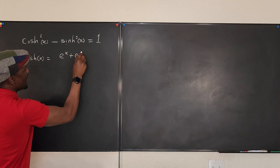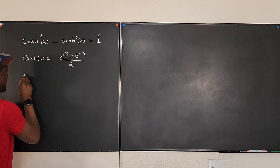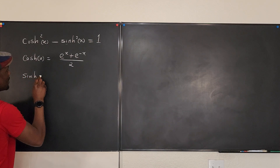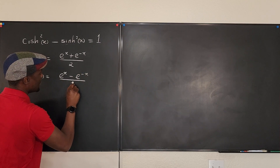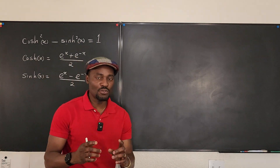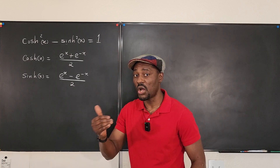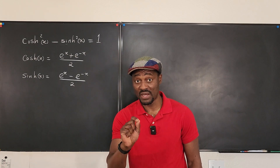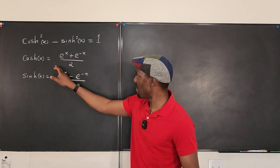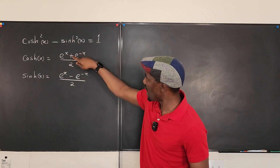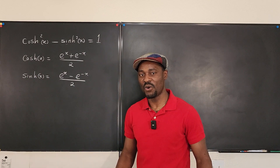Similarly, hyperbolic sine of x is e to the x minus e to the negative x, divided by two. You need to have these memorized. To remember which is which: the sine function is an odd function — it is sensitive to the minus sign — so hyperbolic sine has the minus sign between the terms. Both have one positive and one negative exponent, but the sign between the terms is negative for sine.